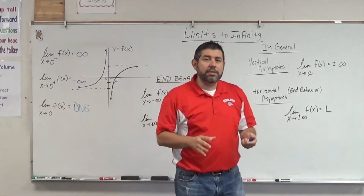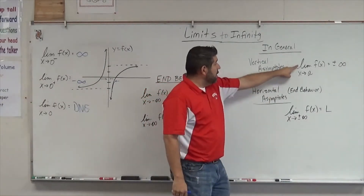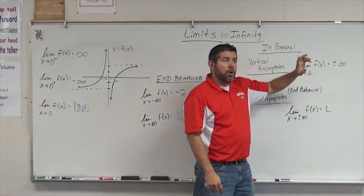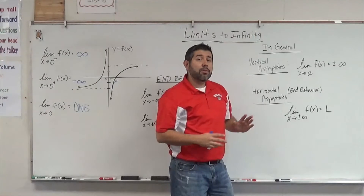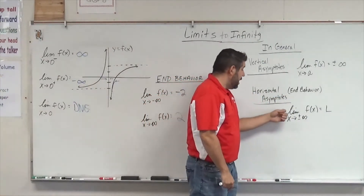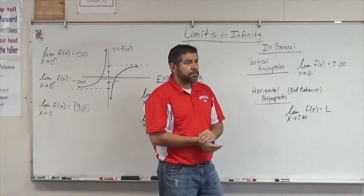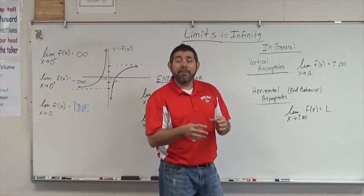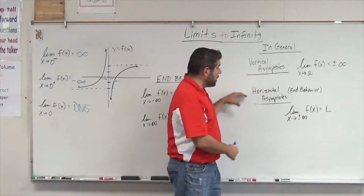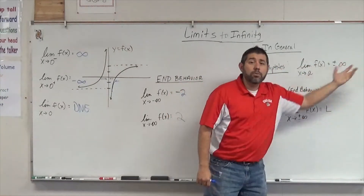In general, when looking at limits to infinity: vertical asymptotes will have limits where the limit as x approaches some number a of f(x) equals positive or negative infinity — positive infinity means going straight up, negative infinity means going down, but either way you have a vertical asymptote. Horizontal asymptotes represent end behavior — the limit as x approaches positive or negative infinity of f(x) equals a number, which is your horizontal asymptote. Sometimes there's no horizontal asymptote and the end behavior is also positive or negative infinity.